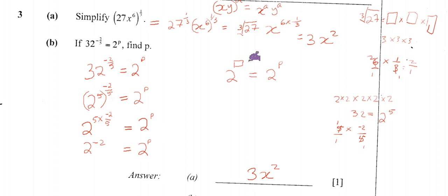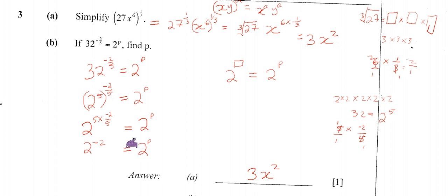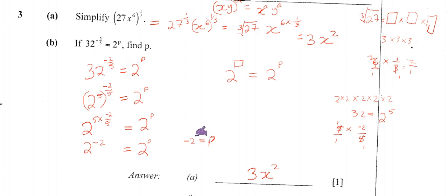Now we have created the situation we wanted: 2 to the power minus 2 equals 2 to the power P. Since both sides are powers of 2 and the left side equals the right side, the powers must be equal. Therefore P is equal to minus 2.